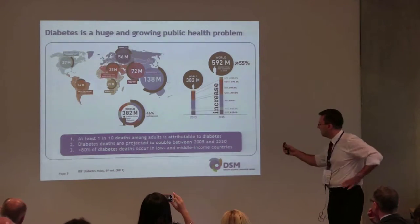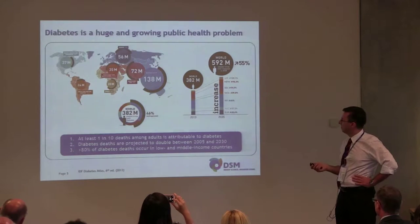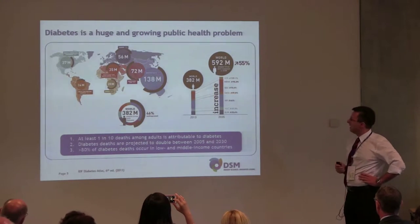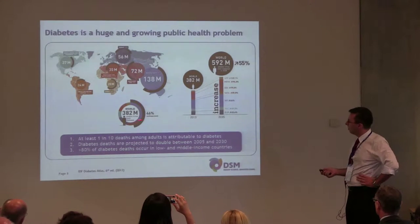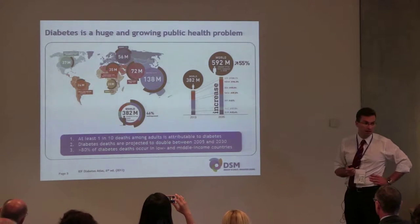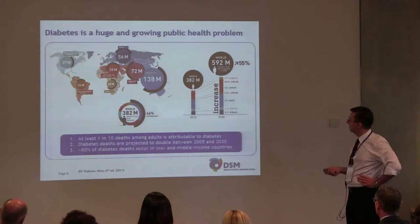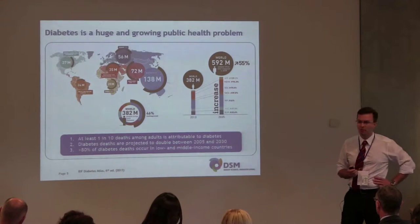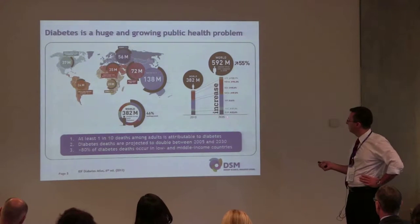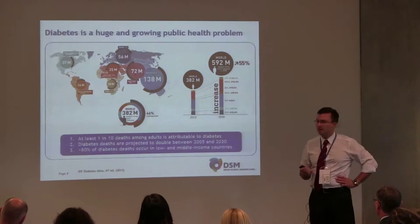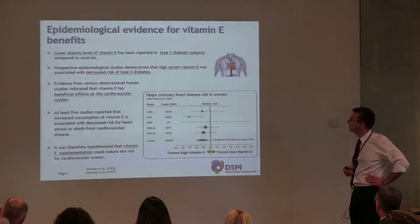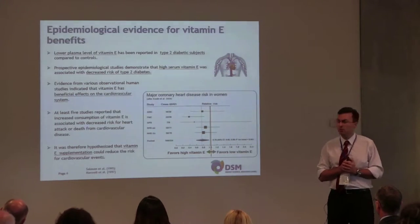This slide shows the prevalence of diabetes, which is enormous, especially in the Southeast Asia region. You can see how many people currently suffer from diabetes, and almost half of them are undiagnosed. Currently almost 400 million people worldwide suffer from this severe condition, and it is estimated that by 2035 it will affect almost 600 million people worldwide.